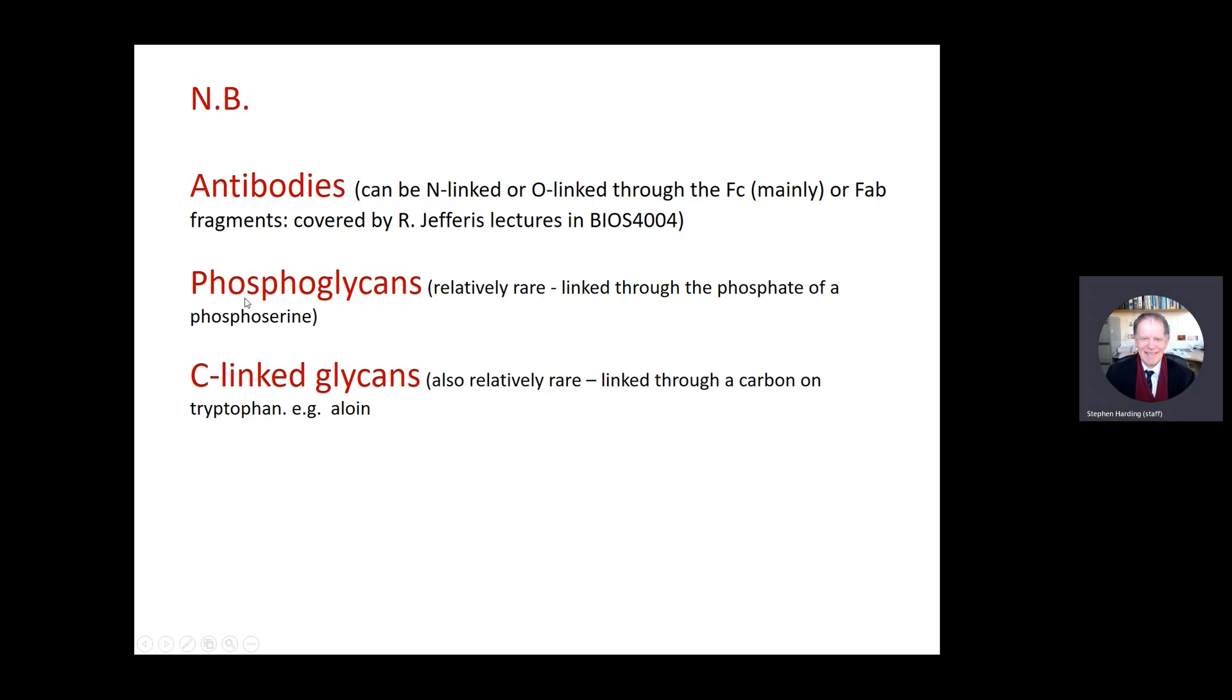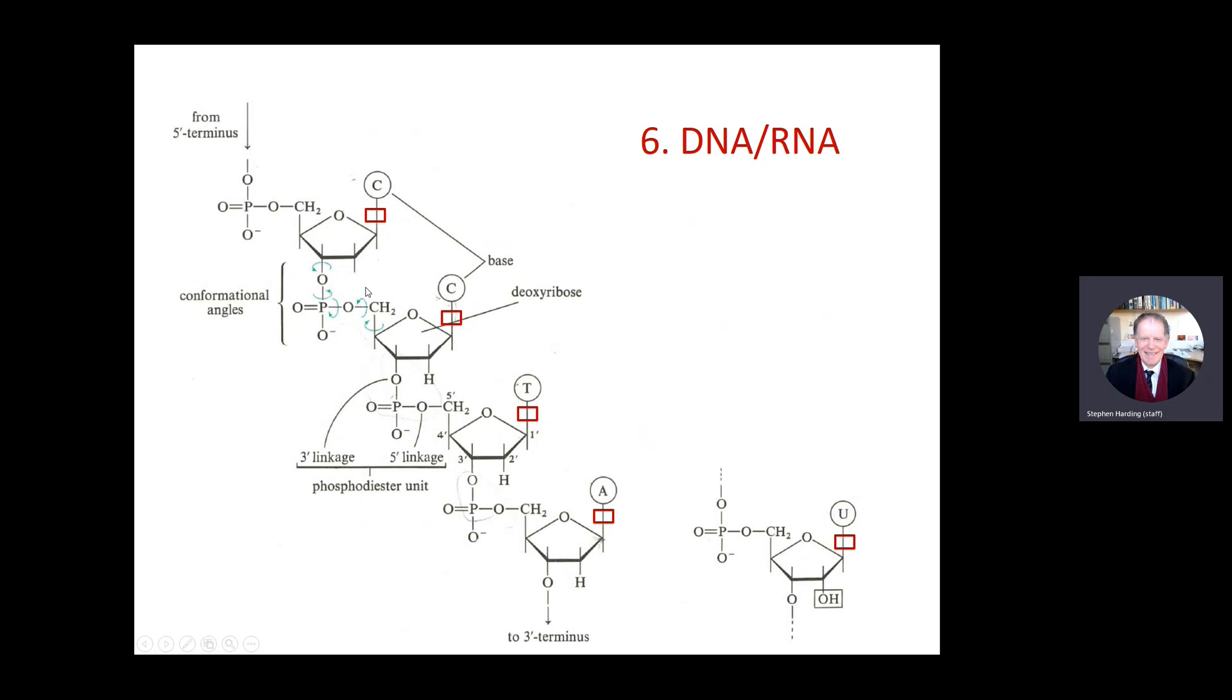And we can also get phosphoglycans. These are relatively rare linked through the phosphate or the phosphoserine residue and also really C-linked glycans, carbon-linked glycans linked through a carbon on tryptophan such as aloin.